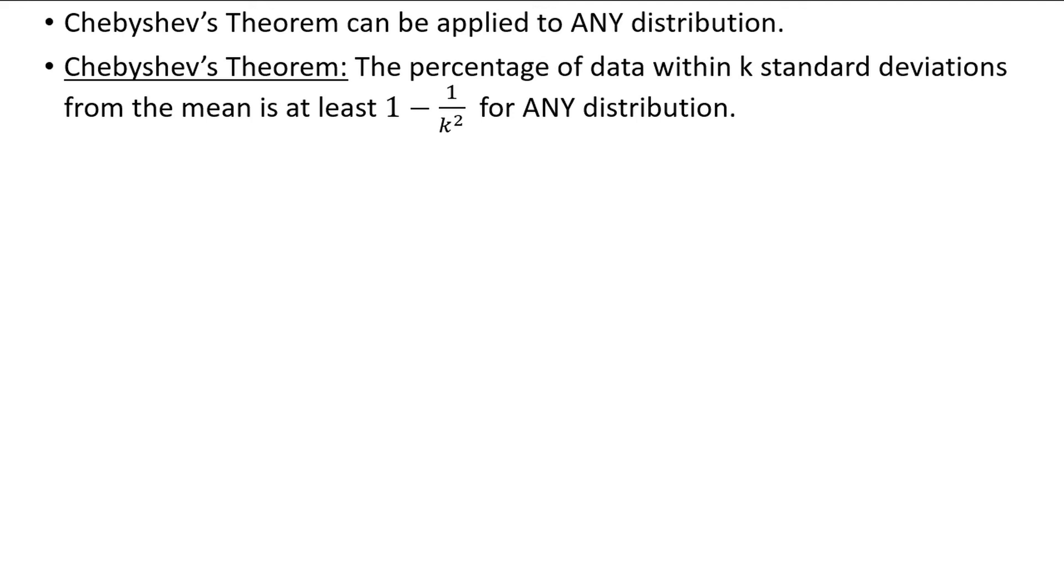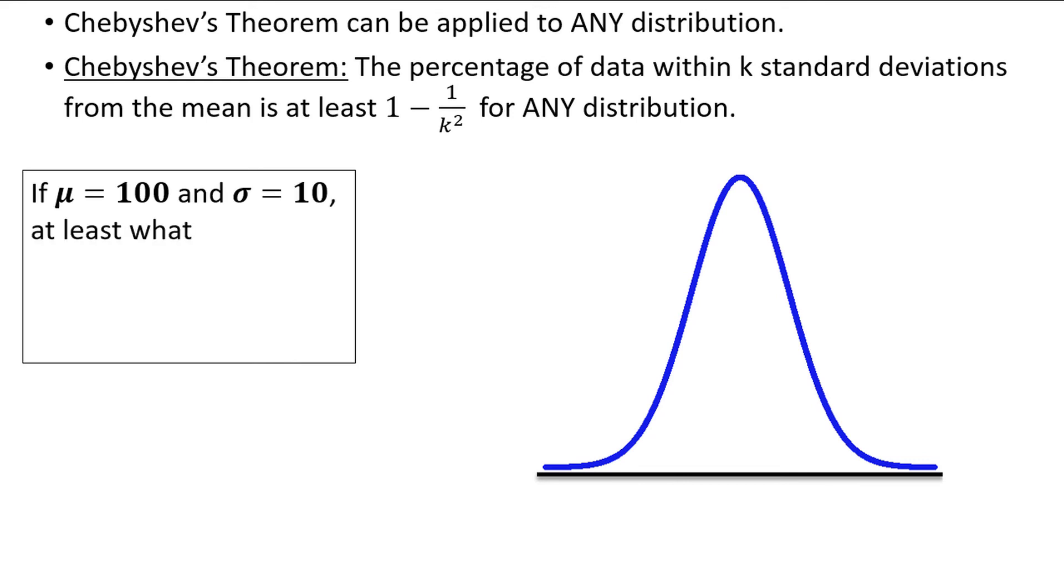Let's look at an example. Let's assume this is our distribution. It's bell-shaped and symmetrical, but any distribution will work for Chebyshev's theorem. Let's say that the mean of this distribution is 100 and the standard deviation is 10. At least what percentage of the data falls within two standard deviations of the mean? Well, the first thing to do is to understand what is meant by two standard deviations from the mean.